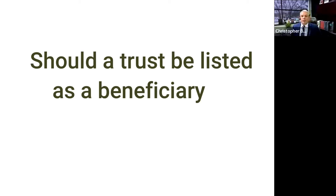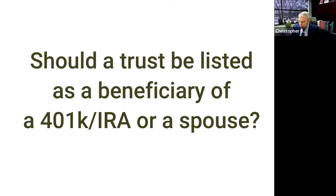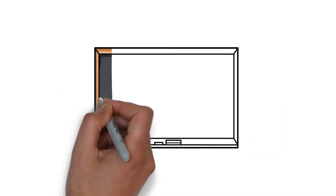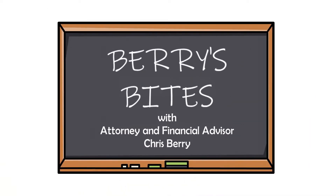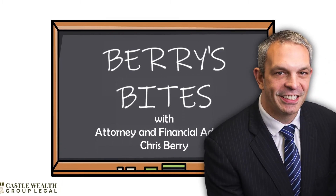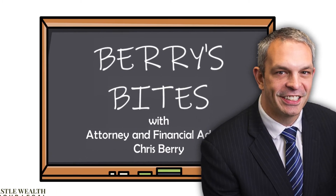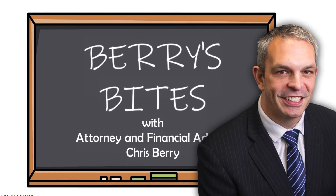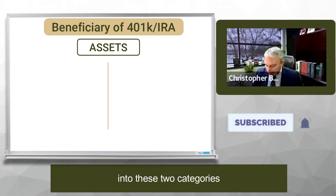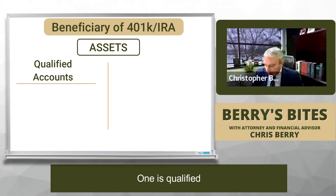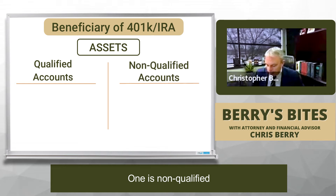Should a trust be listed as a beneficiary of a 401k or IRA, or a spouse? Typically, I break almost all assets into these two categories: one is qualified, one is non-qualified. This is just a general way to think of things.